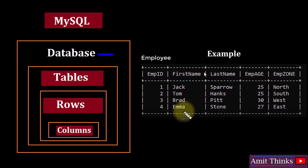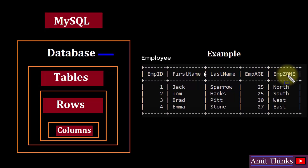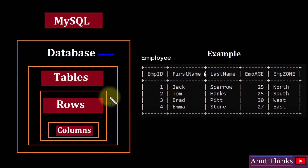Let's say we have a database called 'Employee Records'. Under that we have a table called 'Employee'. Under that table we have the records, that is rows and columns. The columns here are Employee ID, First Name, Last Name, EMP Age (that is employee age), and EMP Zone (that is employee zone) — so these are five columns, and this is how records are represented.